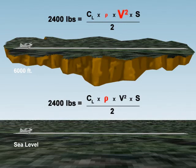Therefore, at 6,000 feet, the aircraft must accelerate to a higher velocity to counter the loss in density altitude in order to produce the amount of lift required to fly.